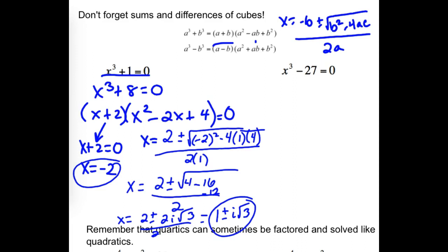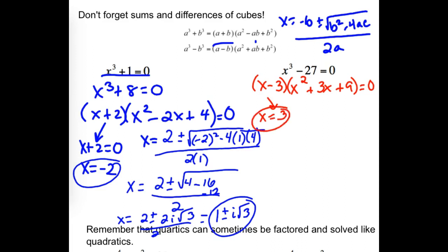Let's keep going. How are we going to start this? The binomial piece would be x minus 3. What's the trinomial part? We square the first one: x squared. We multiply them together: 3 times x. Then square the 3. What sign do I need in the middle? Plus. So right away one answer is x equals positive 3. The other answers require the quadratic formula — go ahead and finish that up.